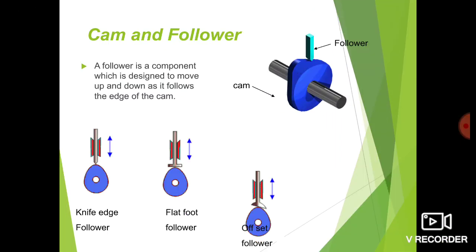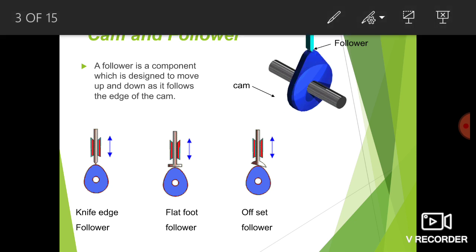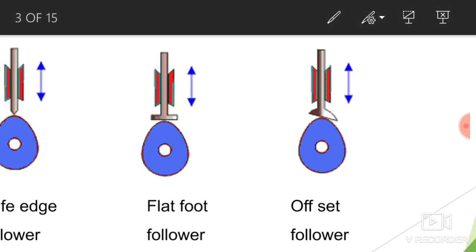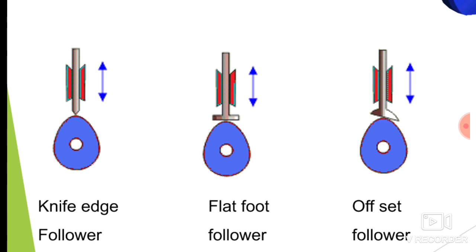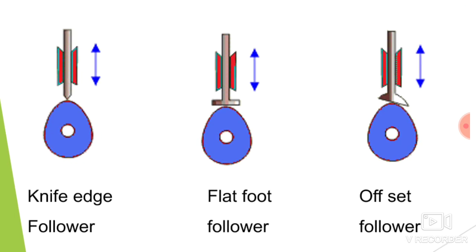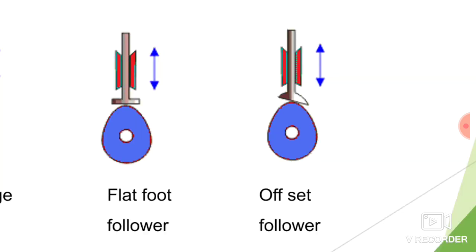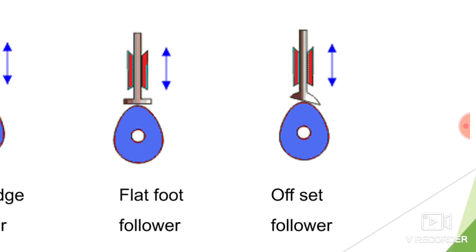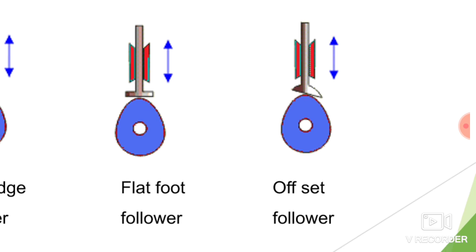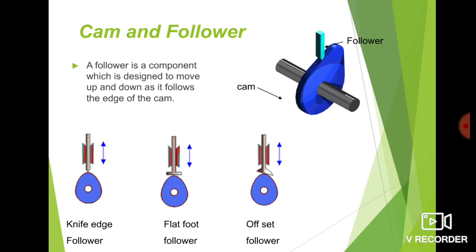The next type is the flat face follower. Here the shape of the follower contact surface is flat, unlike the pointed edge of the knife edge follower. This type of follower is known as flat foot or flat face follower. There is less wear and tear compared to the knife edge follower, so it is more common in use. The next type is the offset follower, where the axis of the follower is at a certain distance from the axis of the cam.